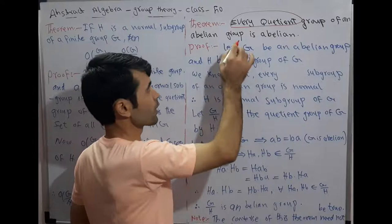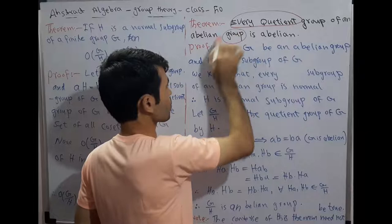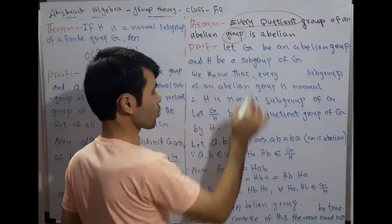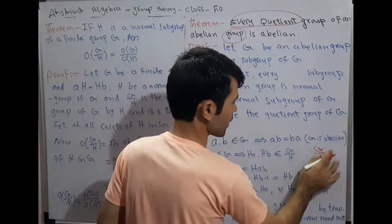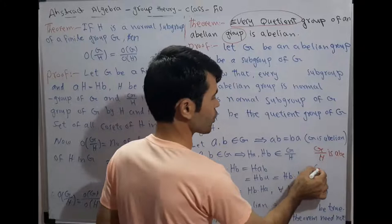If in a group G we have G by H is abelian, we cannot say G is definitely abelian. That conclusion would be wrong.